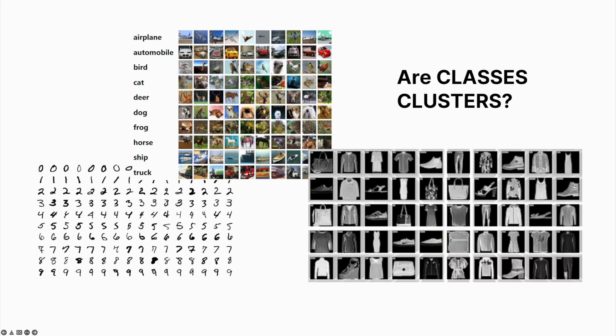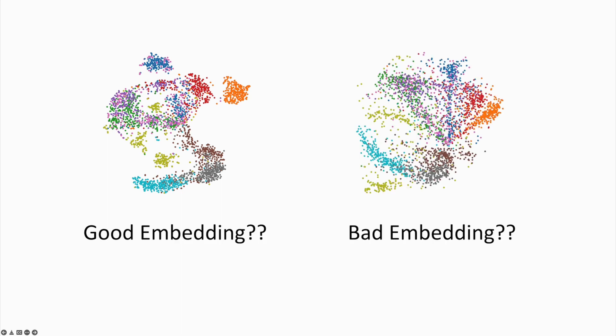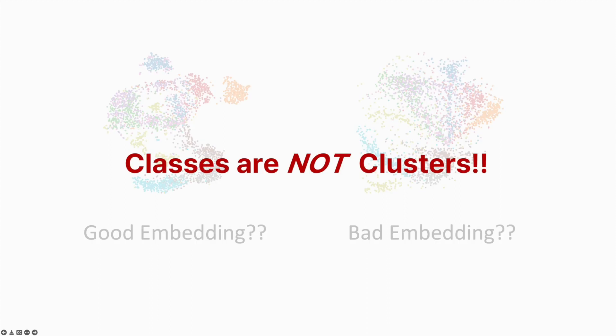Are class labels clusters? If a dimensionality reduction embedding separates class labels well, is it a good representation of the original high-dimensional data? The answer is certainly no.